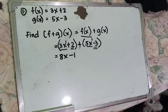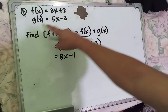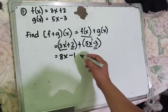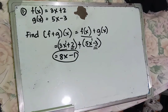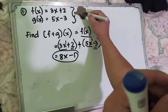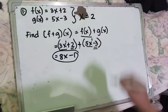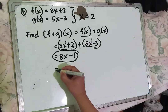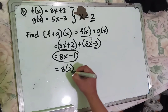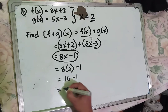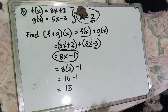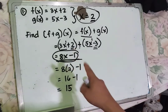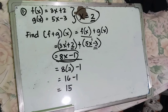Positive 2 minus 3 are like terms (constants), so that is negative 1. The sum of f of x equals 3x plus 2 and g of x equals 5x minus 3 is 8x minus 1. If x equals 2, substitute: 8 times 2 minus 1 equals 16 minus 1, which is 15. If there is no value for x, the final answer is 8x minus 1.